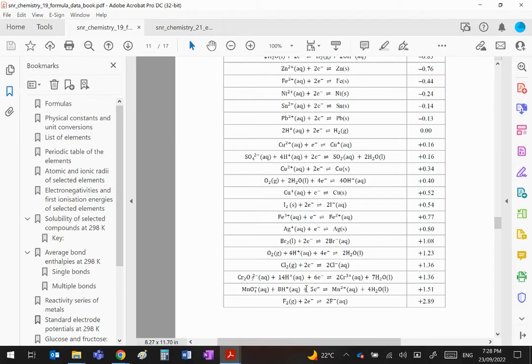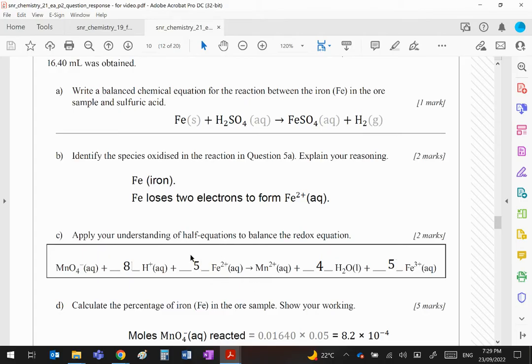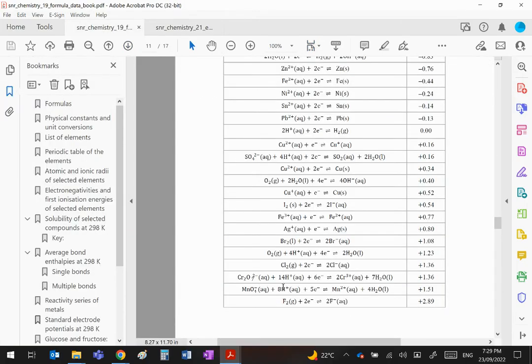And this equation again, MnO4 minus to Mn2+. Now you will notice this requires five electrons, this provides one. So you will need to multiply this equation by five, and that's why in the answer you will see a five there and a five there. Now where do the eight and the four come from? There's your eight, there's your four. They give it to you.